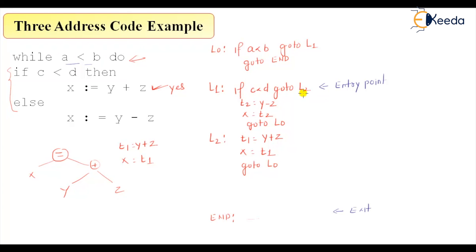So this is the entry point, and the first condition checking go to L2 is the yes part. L2 is t1 is equal to y plus z, x equal to t1, and then again reiterate the condition. So here what we are doing, this statement is reiterating the loop.